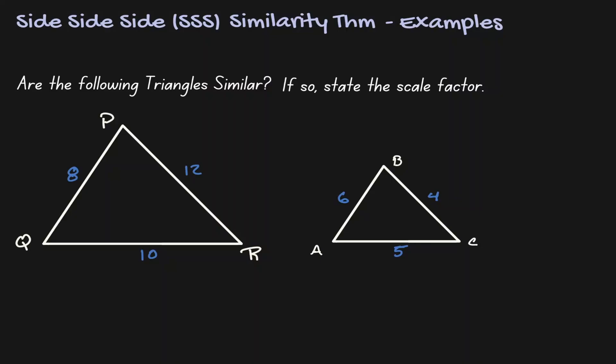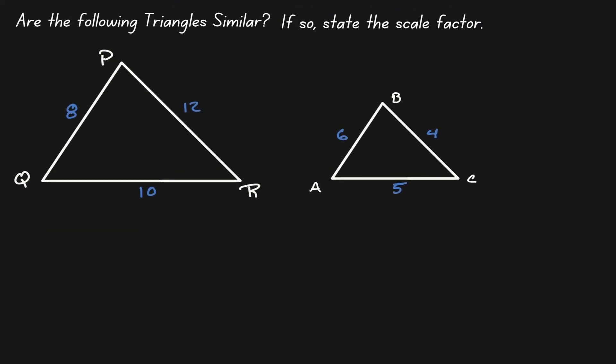Welcome. Let's take a look at some examples where we can use the SSS similarity theorem. In this example we want to show that we have similar triangles, and once we identify that they're similar, we want to state their scale factor. When we take a look at the given information, notice that we have the length of all sides of both triangles. When you have that situation, then we want to think about SSS similarity theorem.